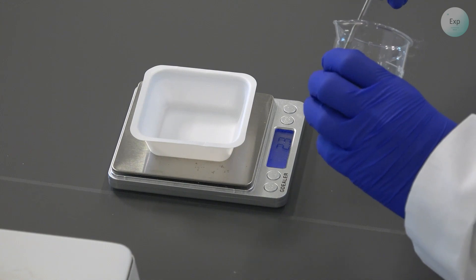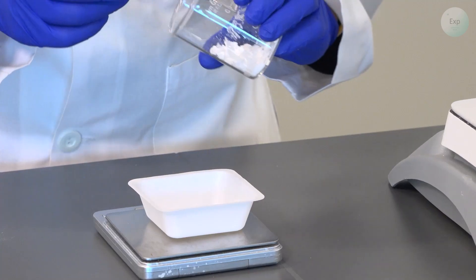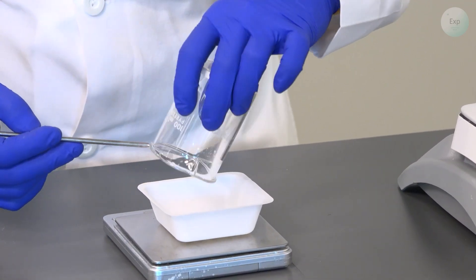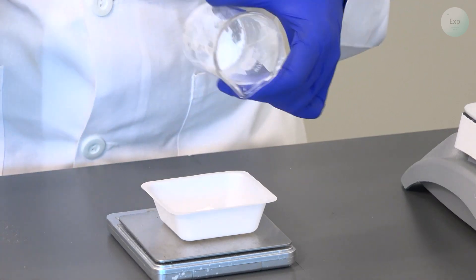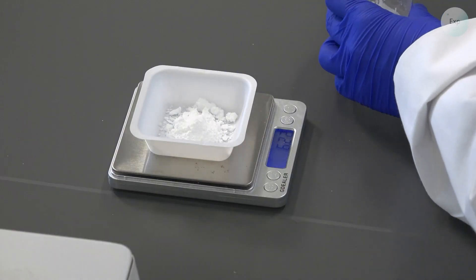So the mass of my weighing boat is 2.31 grams. But I do have some more salt to work with.